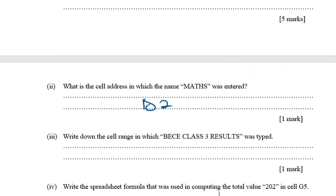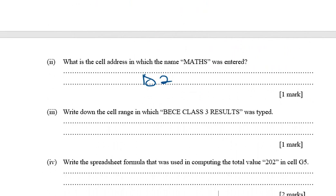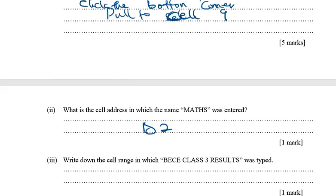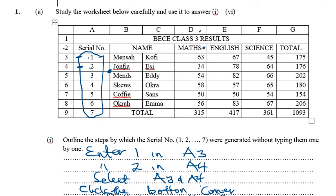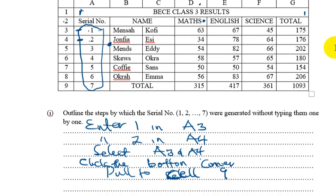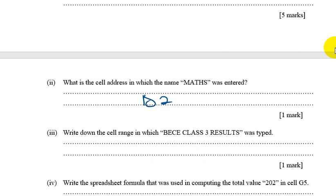The next part says: write down the cell range in which 'Basic Class Result 3' was typed. It was typed between A1 and J1, so the cell range is A1:J1. That is where it was typed.